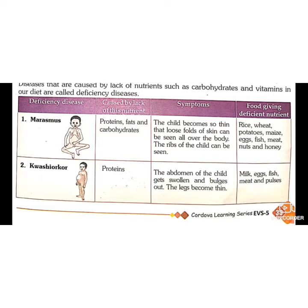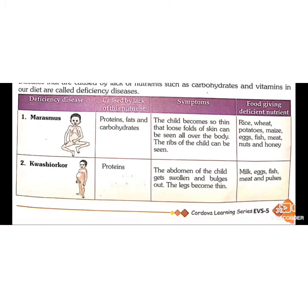First is Marasmus, a disease of children caused due to lack of proteins, fats, and carbohydrates in the diet. The child becomes very thin — the ribs can be seen easily and loose folds of skin are visible. Foods to give include rice, wheat, potato, maize, eggs, fish, meat, nuts, and honey — foods rich in carbohydrates, fats, and proteins.